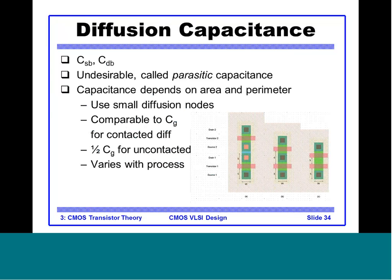The diffusion capacitances are denoted CSB (source-to-body) and CDB (drain-to-body). These are undesirable — also called parasitics. In VLSI design, 'parasitic' means anything undesirable, whether parasitic capacitance or resistance. They are undesirable because they make the device slower. The capacitance depends on area and perimeter, and can be reduced by using smaller diffusion nodes. Uncontacted diffusion exhibits less capacitance than contacted diffusion.